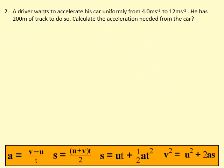A driver wants to accelerate his car uniformly from 4 meters per second to 12 meters per second. So that's the initial speed and that's the final speed. Now uniformly means constant. So the acceleration is constant, which means that we can use the SUVAT equations. He has 200 meters of track to do so. That's the distance or the displacement in this case. And calculate the acceleration. That's what we want to find.